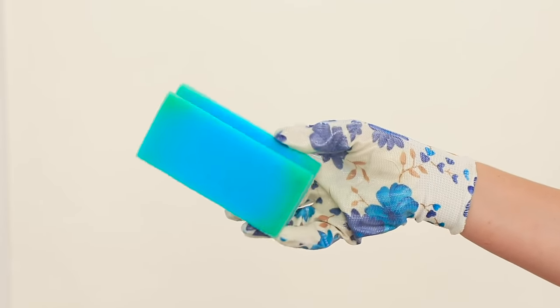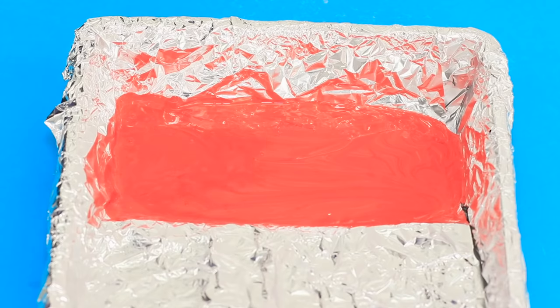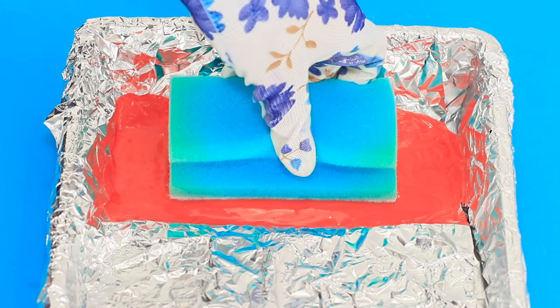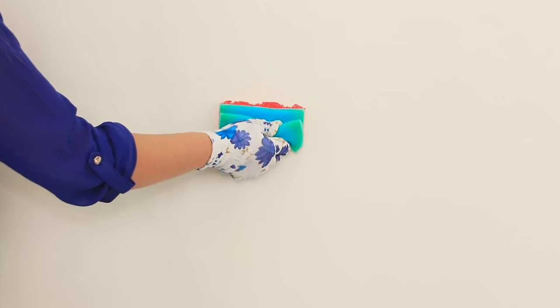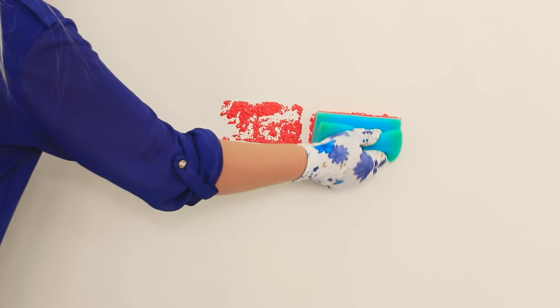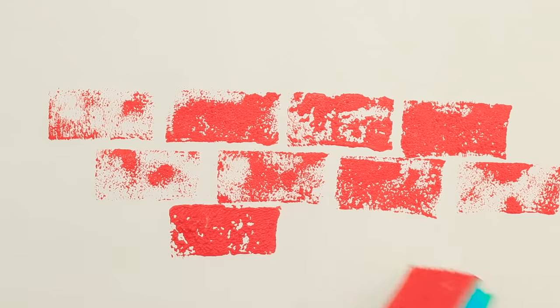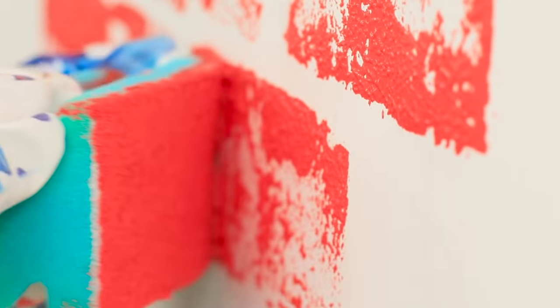For this idea, you need a sponge for washing dishes. Dip it in red paint. And stamp the paint on the wall. Make strips from the prints. Arrange them in a chessboard pattern. And make a brick wall.